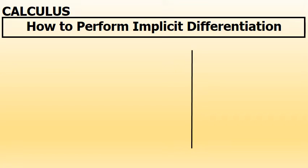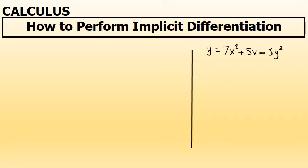Let's talk about the steps required to perform an implicit differentiation. The process of implicit differentiation is required when differentiating an equation with respect to x, and in that equation, variables other than x appear. In this problem, y equals 7x squared plus 5x minus 3y squared. If we were being asked to differentiate with respect to x, implicit differentiation would be required for the two terms that involve a variable other than x.